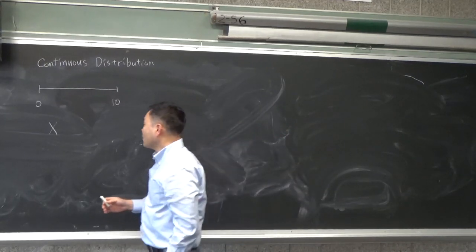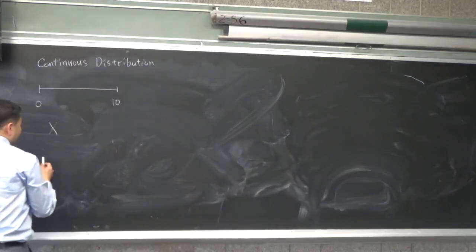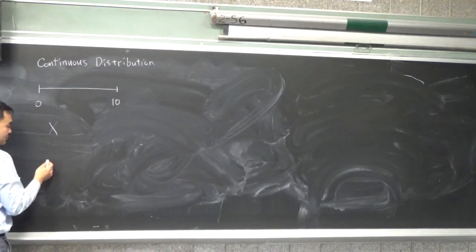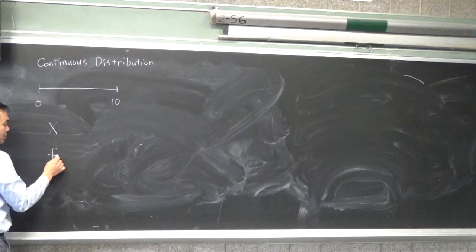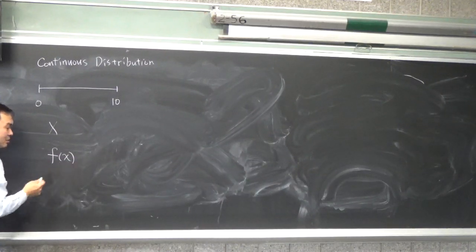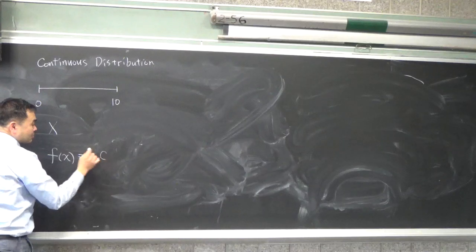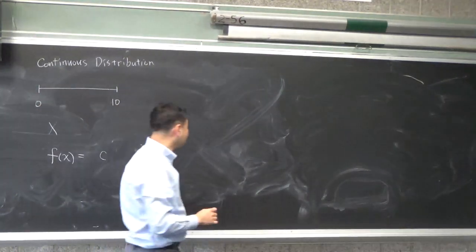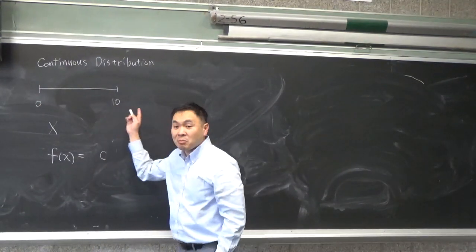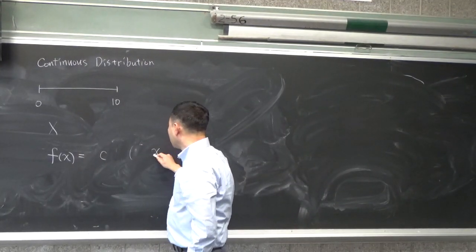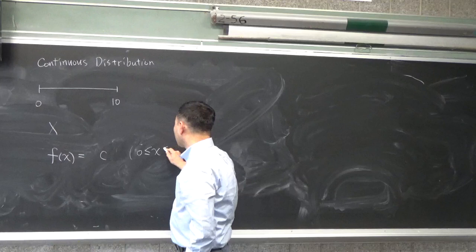So in such a case, you have to assume that x follows the uniform distribution, so the probability distribution function will be like this. It will be a constant, just a single constant number, same probability everywhere, where the value of x will now be between 0 to 10.